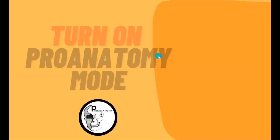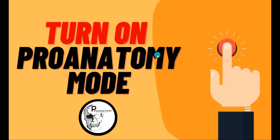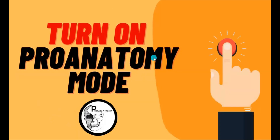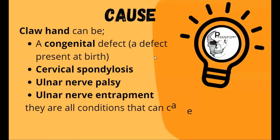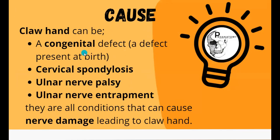Let's turn the pro-anatomy mode on to see what causes this clinical presentation. Claw hand deformity can either be a congenital defect — an injury caused to the nerves during delivery or before — or it can result from cervical spondylosis, which involves injury to the nerve roots of the ulnar nerve. Ulnar nerve palsy and ulnar nerve entrapment are other causes of this condition.